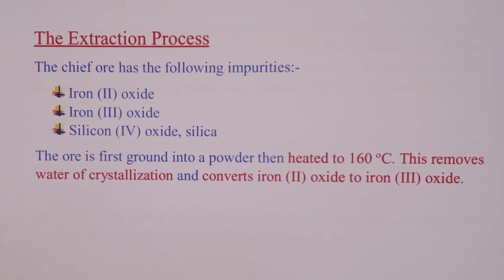It is worth noting that our chief ore will have the following impurities: iron (II) oxide in our ore as an impurity, iron (III) oxide, and silicon (IV) oxide, which is commonly referred to as silica. So the ore is first ground into a powder, then we heat it to about 160 degrees Celsius.